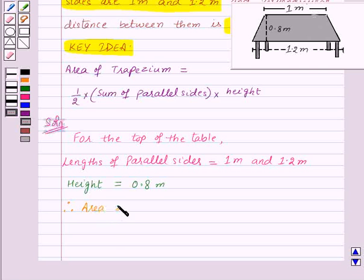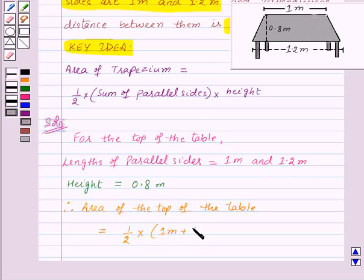Therefore, area of the top of the table is equal to half into sum of parallel sides, and parallel sides are 1 meter and 1.2 meter. So 1 meter plus 1.2 meter into height and height is 0.8 meter.